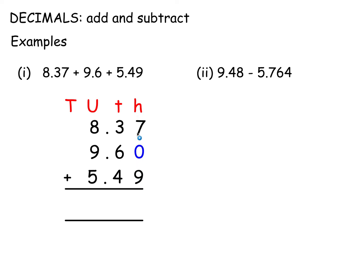9 plus 7 is 16 — put down 6, carry 1. Then 3, 6, and 4 and the one you carried, and so on. So it's a normal sum and you simply line up the decimal point.